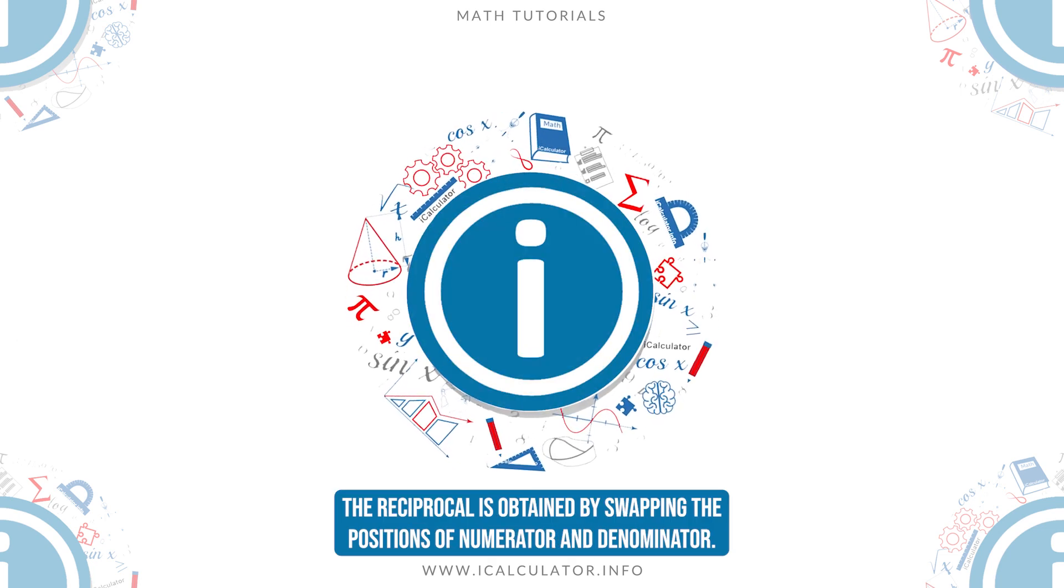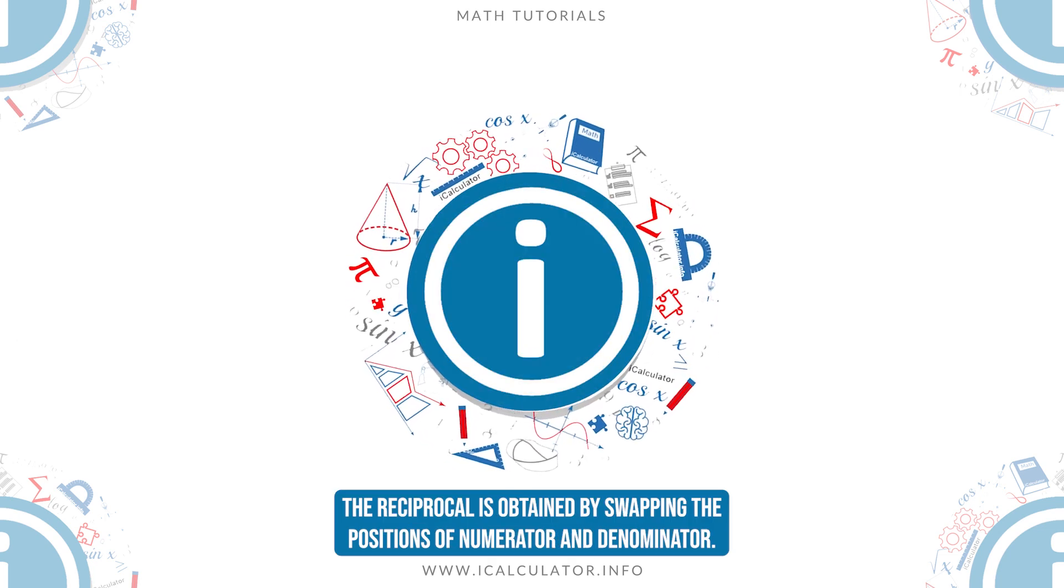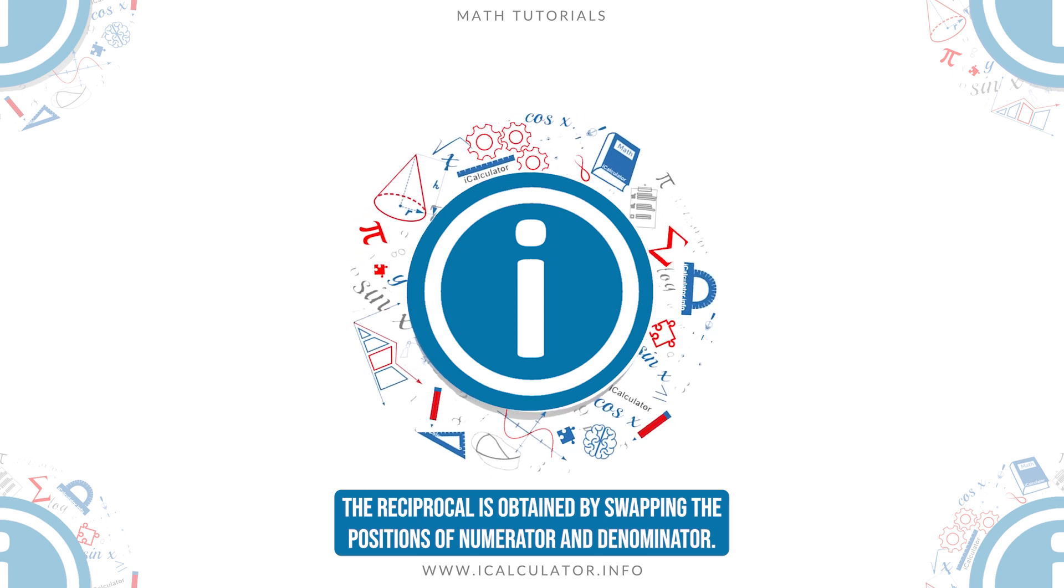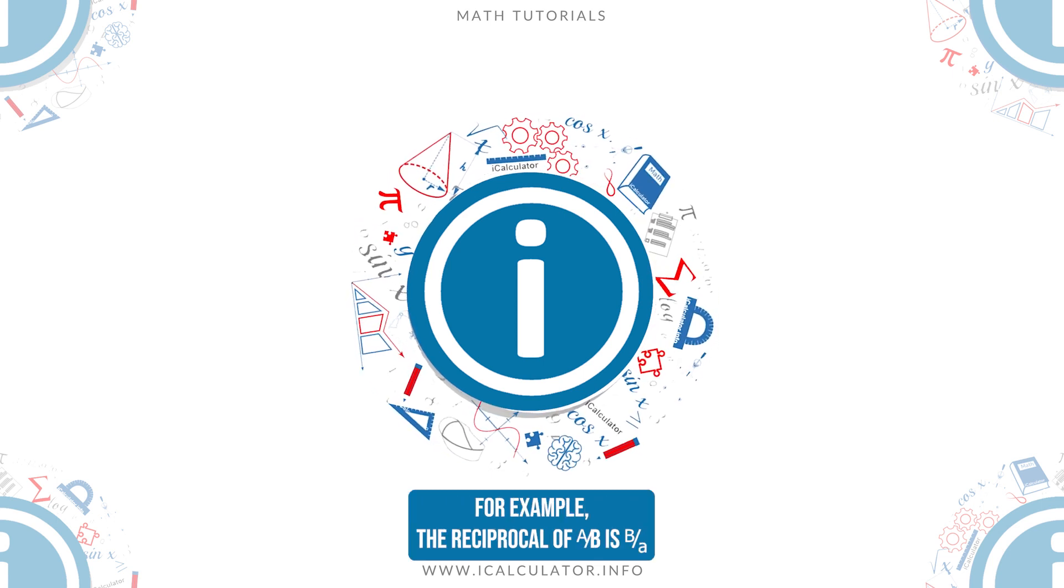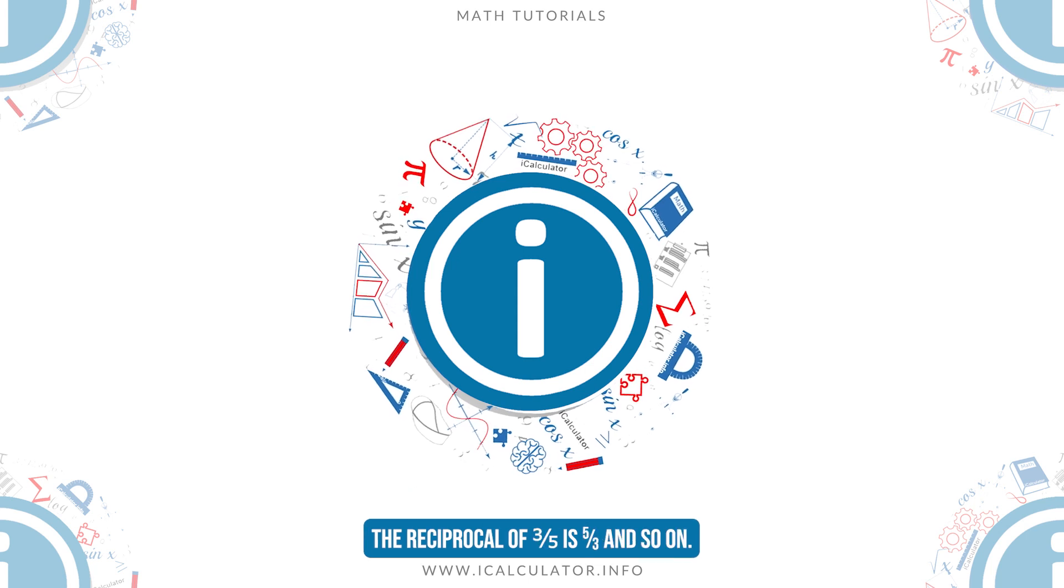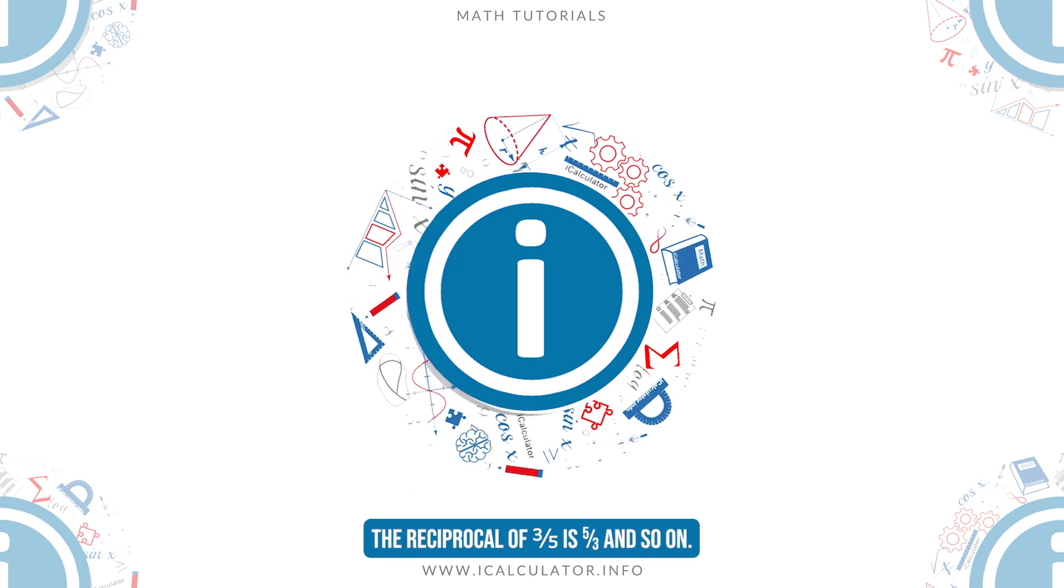In fractions, the reciprocal is obtained by swapping the positions of numerator and denominator. For example, the reciprocal of a over b is b over a, the reciprocal of 3 over 5 is 5 over 3, etc.